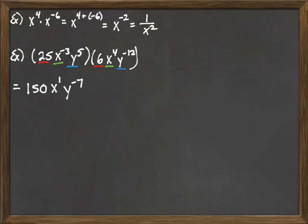We've done our multiplication step. Now, at the end of the problem, there's nothing else I can do as far as multiplying. They're all different things. So now, at the end of the problem, is when we deal with the negative exponents. Only the stuff with the negative exponents moves. The 150 and the x to the first stay put in the numerator. The y to the negative seventh moves to the bottom, becomes y to the positive seventh. Now we have our answer: 150x over y to the seventh.